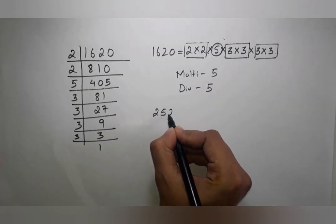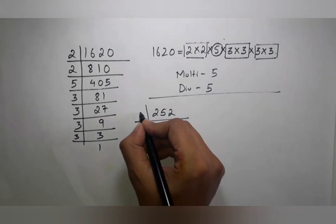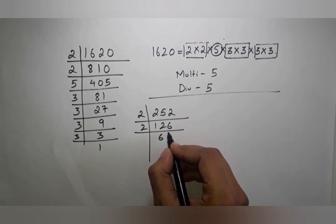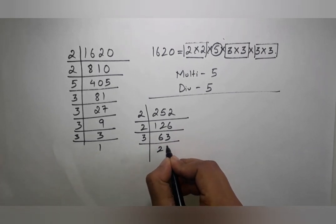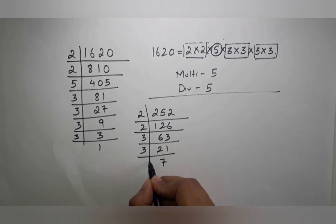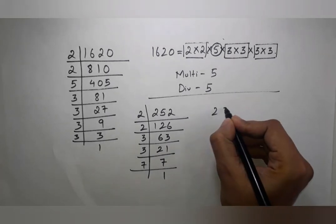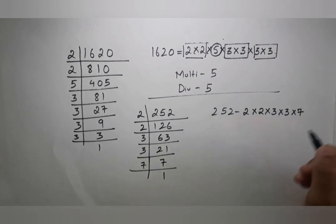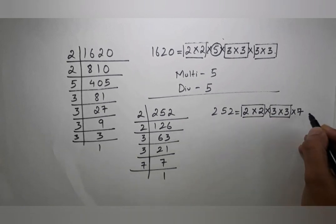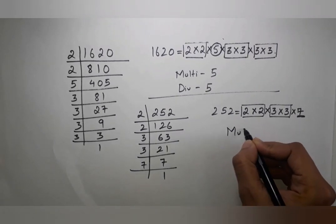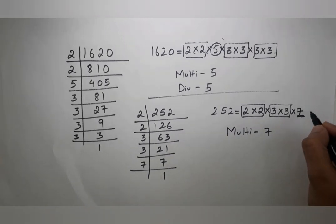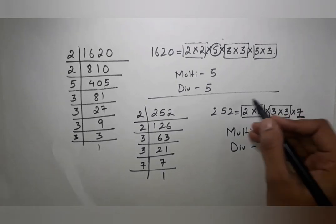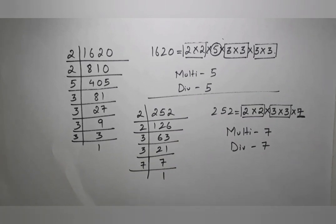Let me take one more small example: 252. For 252, I do prime factorization: 252 ÷ 2 = 126, 126 ÷ 2 = 63, 63 ÷ 3 = 21, 21 ÷ 3 = 7. So 252 = 2 × 2 × 3 × 3 × 7. Pairing: 2×2 is one pair, 3×3 is another pair, but 7 is left unpaired. So the smallest number to multiply or divide is 7.